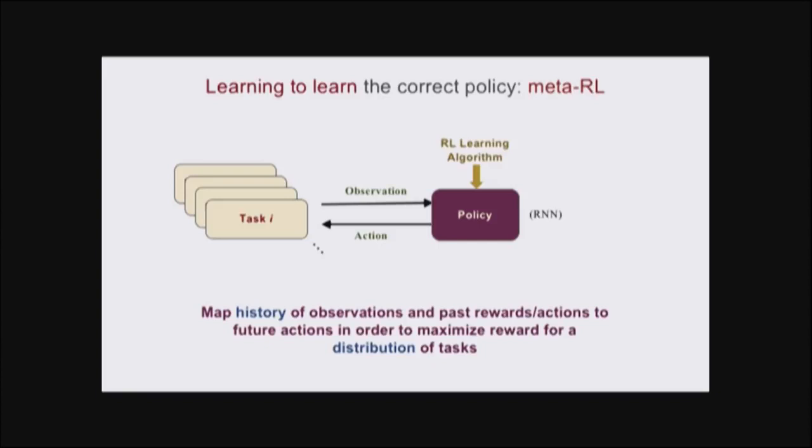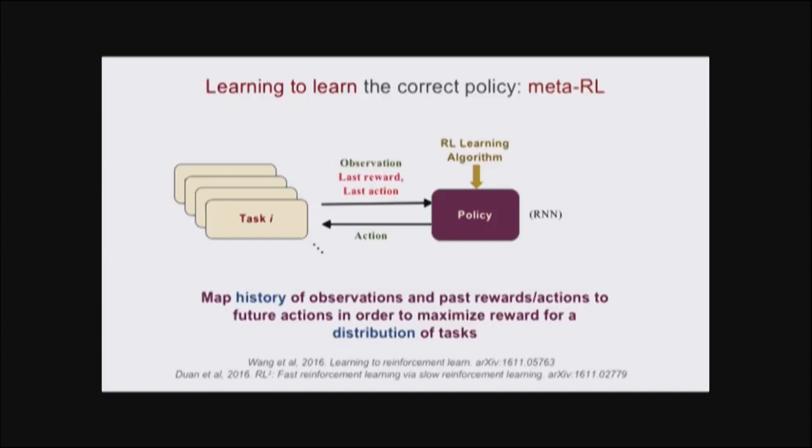But if we want our algorithm to meta-reinforcement learn, we need two additional ingredients. As mentioned before, we need a distribution of tasks that all share task structure. We can't just learn on one task. Second, we want to augment the observation with the past history of rewards and actions. In this way, the recurrent neural network is able to map the history of past observations, actions and rewards to future actions in order to pick up on the task structure that exists in our distribution of tasks. This mapping is done via the hidden states, activations of the RNN, which I'll also refer to as activity dynamics.